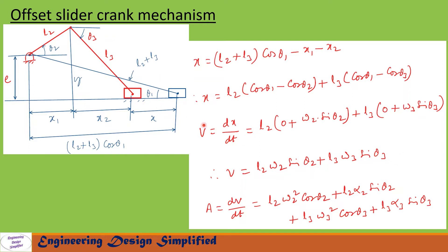To find the acceleration of the slider, we need to differentiate the velocity equation one more time with respect to time. So acceleration a = dv/dt = l2·omega2²·cos(theta2) + l2·alpha2·sin(theta2) + l3·omega3²·cos(theta3) + l3·alpha3·sin(theta3).